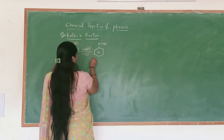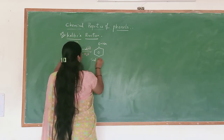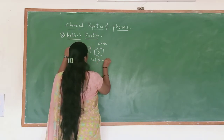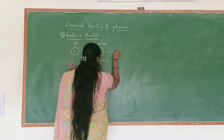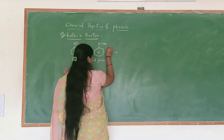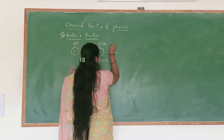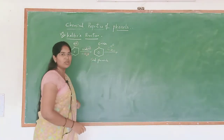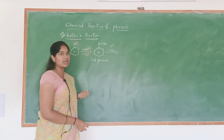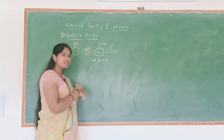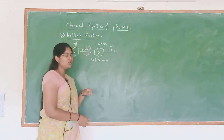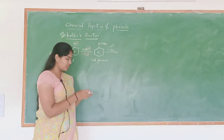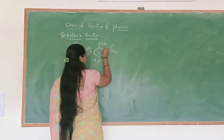We got sodium phenoxide. Now this sodium phenoxide undergoes reaction with carbon dioxide. Before adding CO2 to the sodium phenoxide, a small rearrangement will take place within the molecule. An ortho position hydrogen is present.